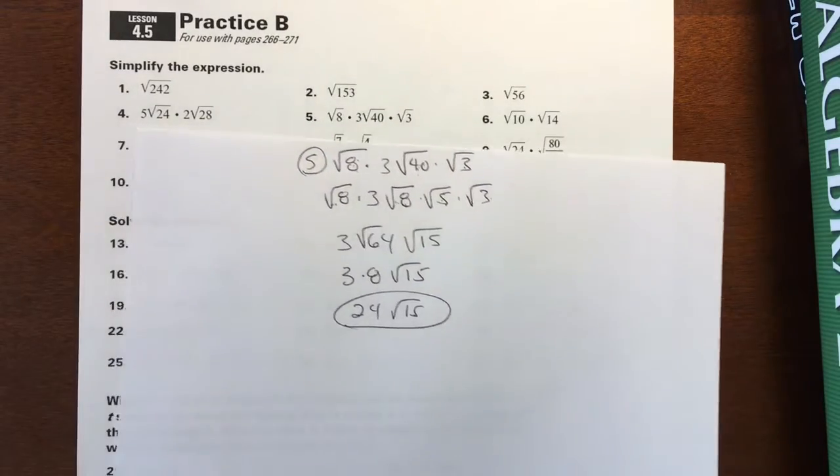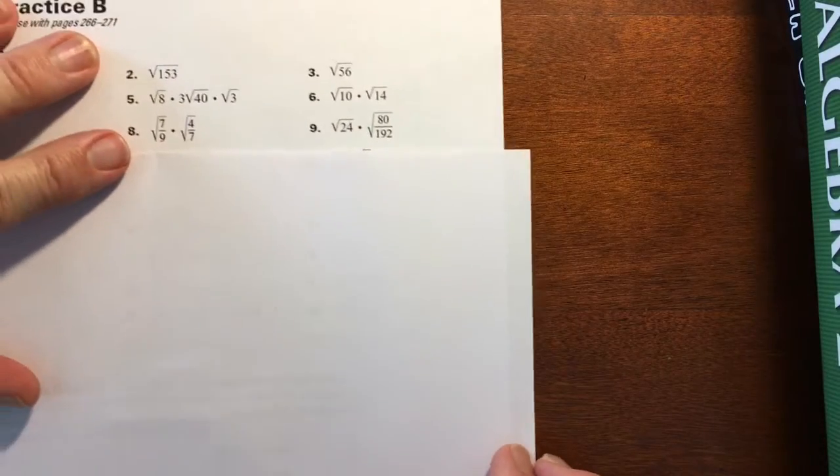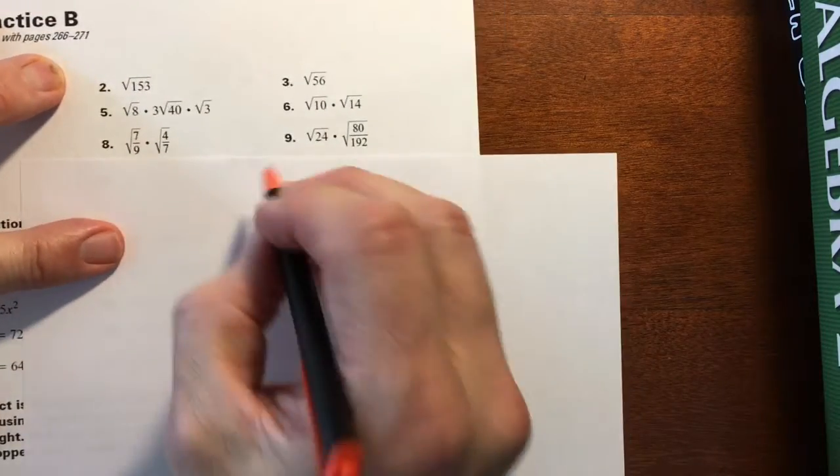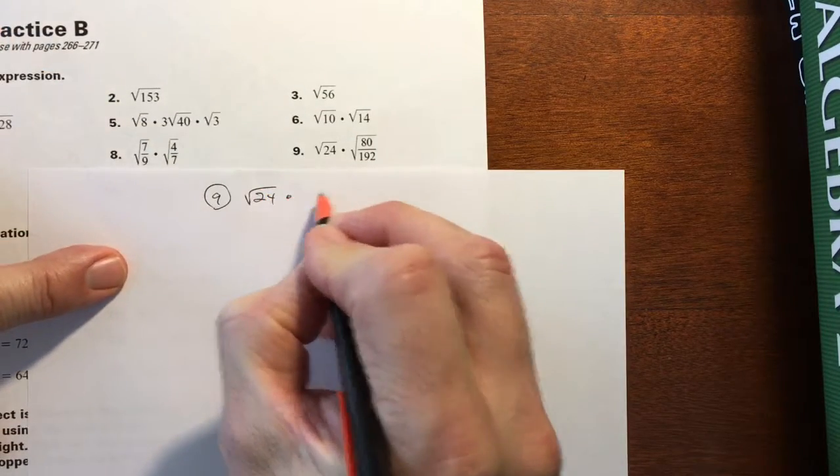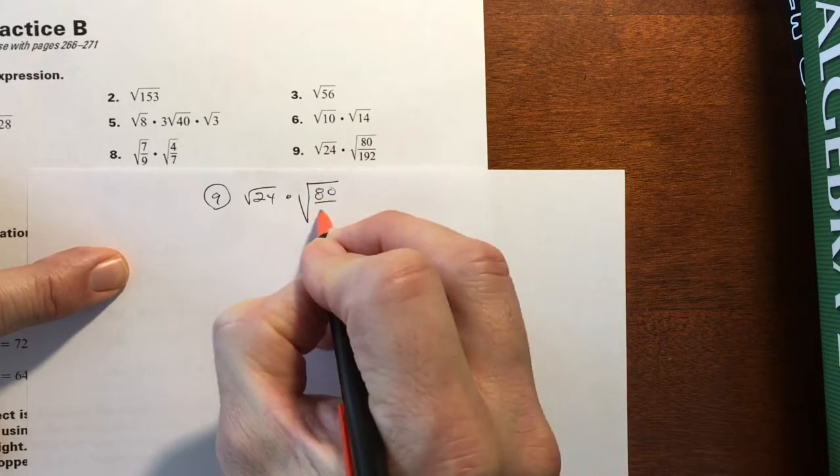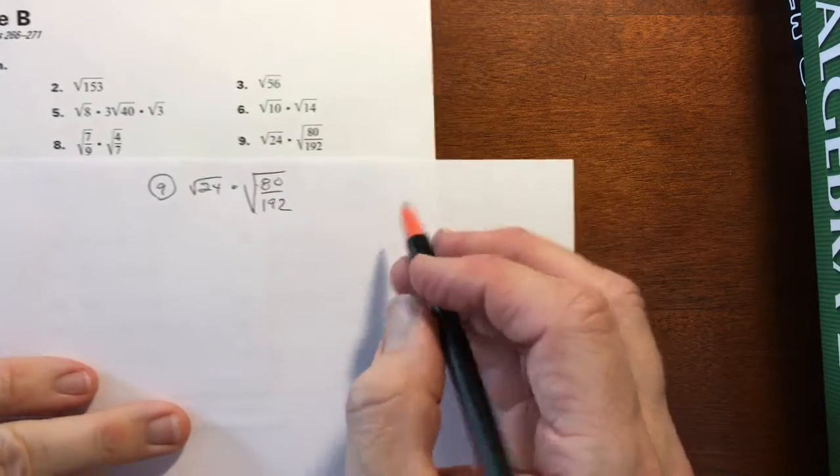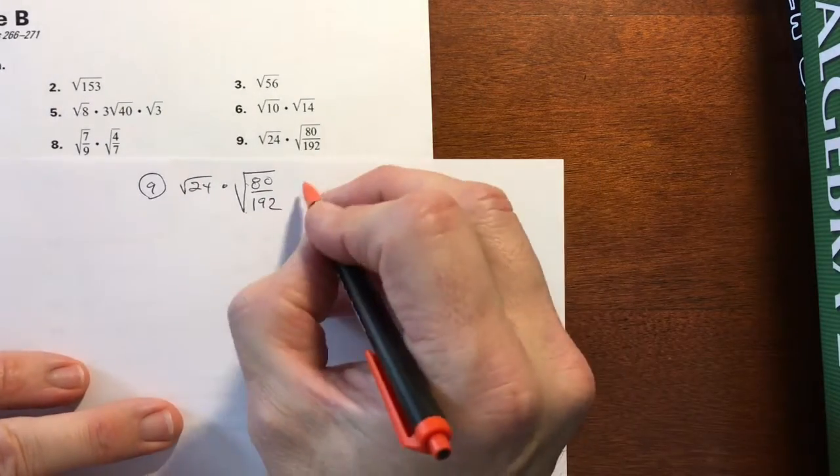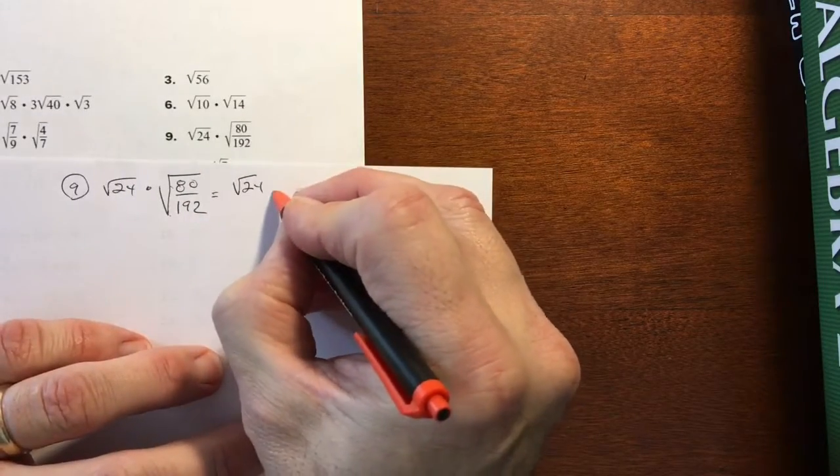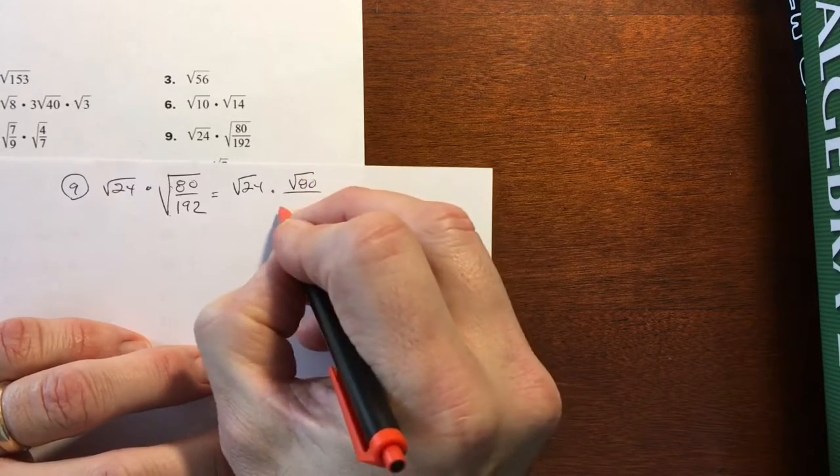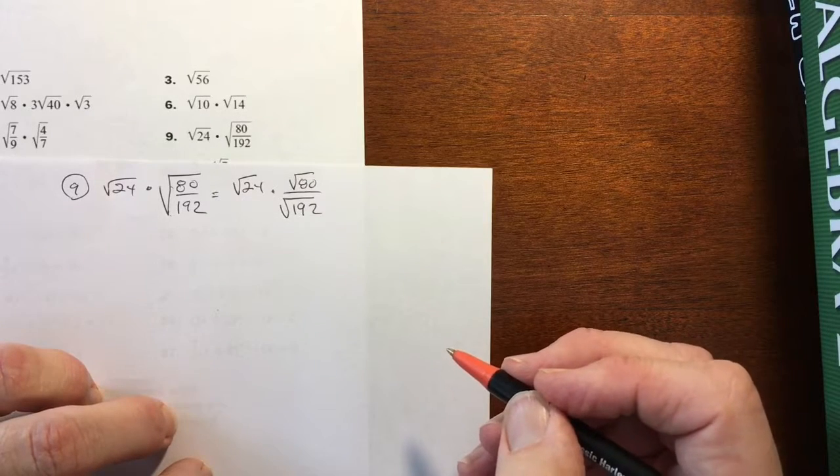All right, the last one for you is number 9. A little different with the fraction in the radical. So it's going to be square root of 24 times, again, I'm showing you everything here so you see every step. I'm just going to split the radical so that we can then work independently on the numerators and denominators. So this is going to be equal to square root of 24 times square root of 80 over the square root of 192.